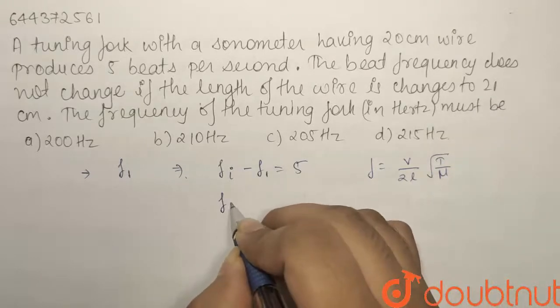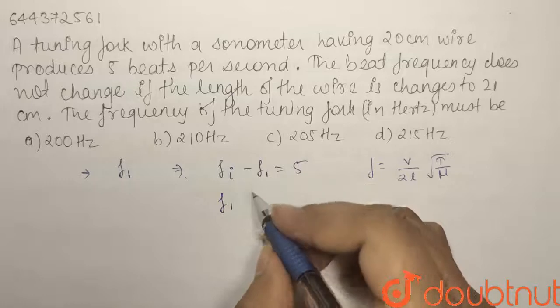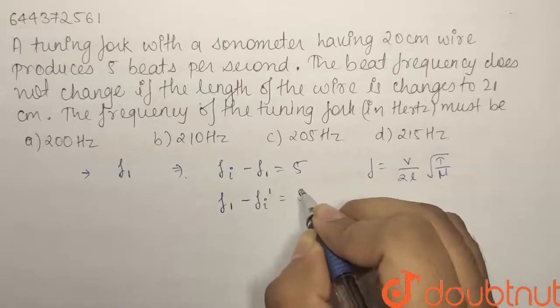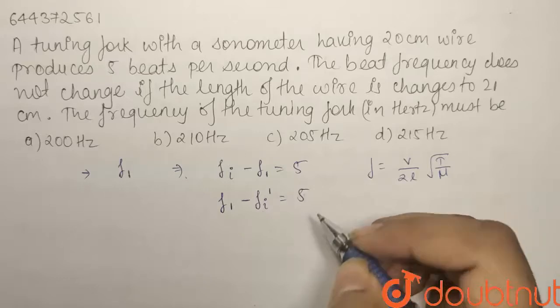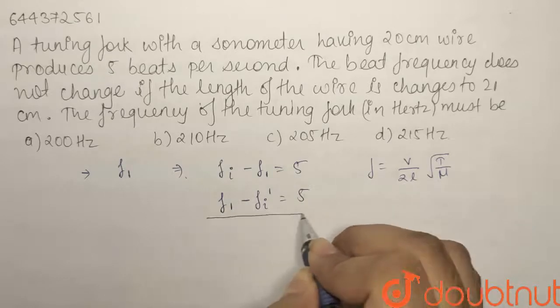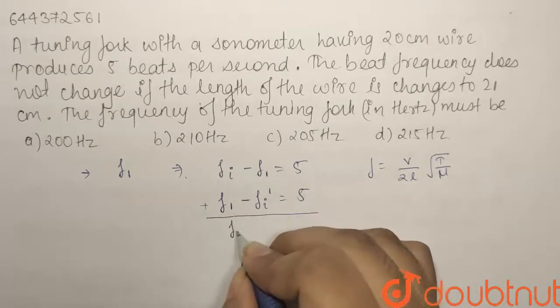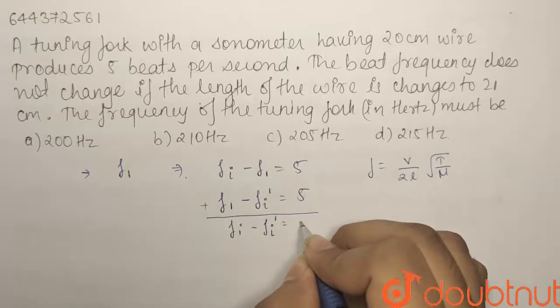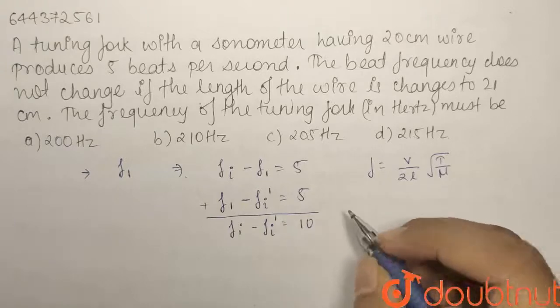This means that in the second case f1 will be greater and f1 minus fi dash will be equal to 5 as well. If we add these two equations we get fi minus fi dash is equal to 10.